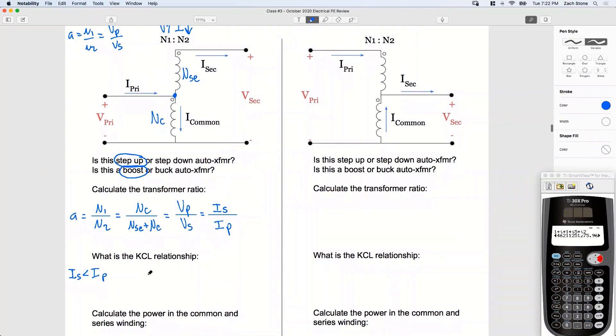KCL says the current's entering equals the current leaving. How much current is entering this node? Just I primary. I primary goes in. So I have IP or I primary equals what current is leaving this node. I common is leaving, because I secondary has to be smaller than I primary. So we've got I common is leaving and I secondary is leaving.